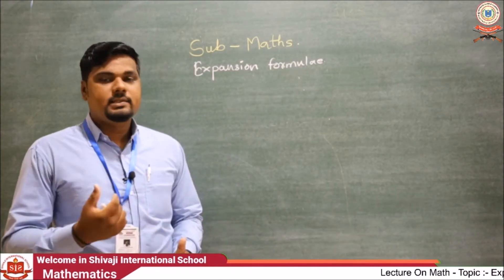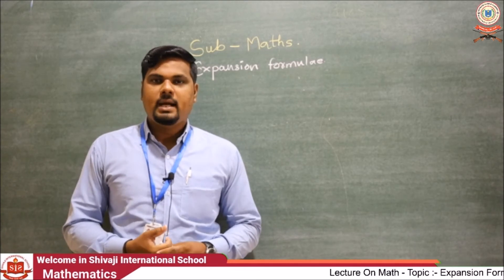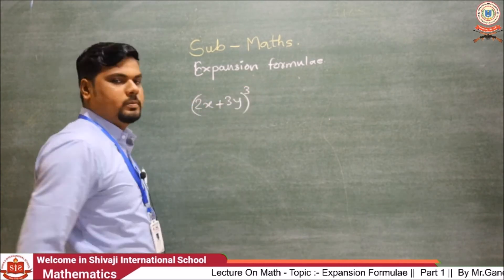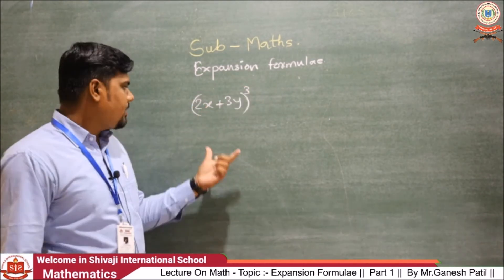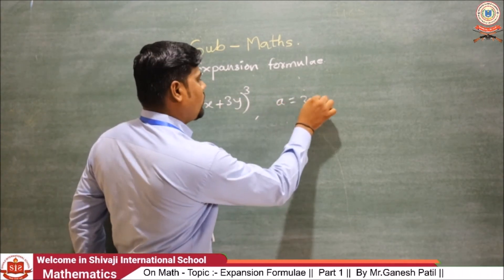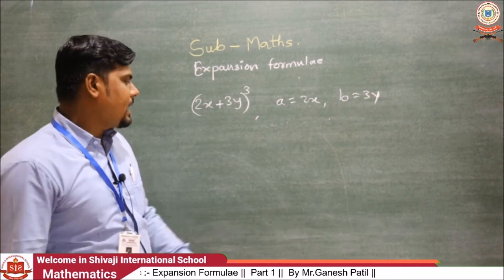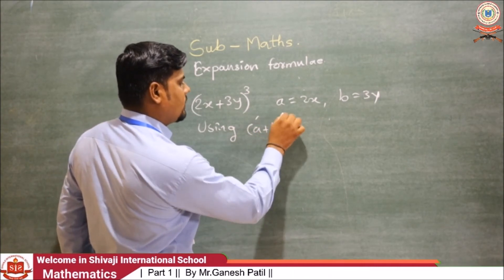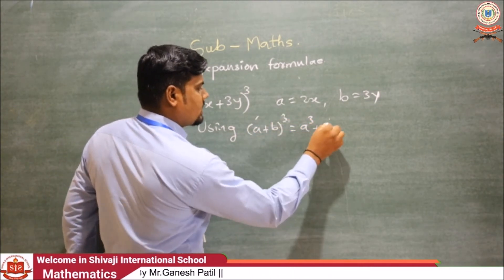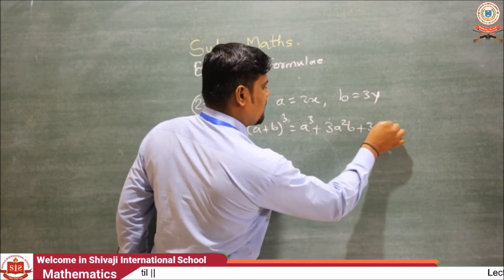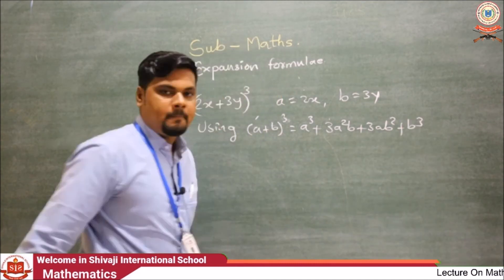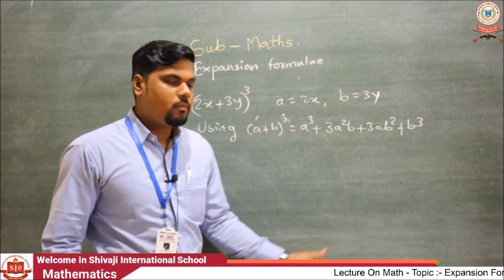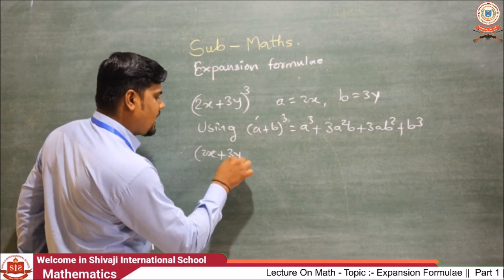So the expansion of (A + B)³ is: A³ + 3A²B + 3AB² + B³. Now let us see one example based on this formula. The example is (2x + 3y)³. We compare: A = 2x and B = 3y, and then apply the formula (A + B)³ = A³ + 3A²B + 3AB² + B³.